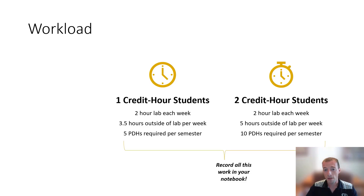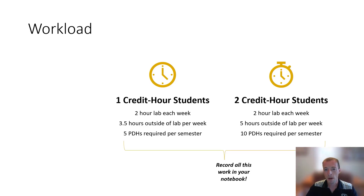The last requirement for a one credit hour student is they're going to do five — what we call professional development hours or PDHs — per semester. Across the whole semester you'll put in five hours of time learning the professional and technical skills that you need to be successful in the class.